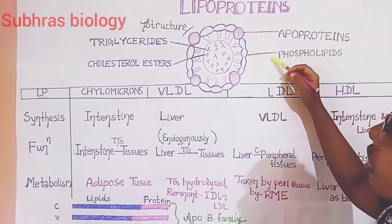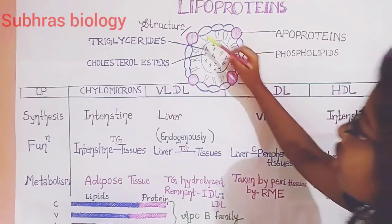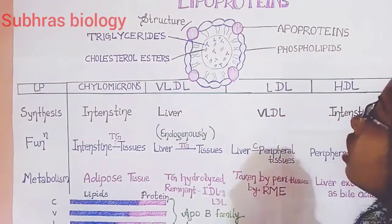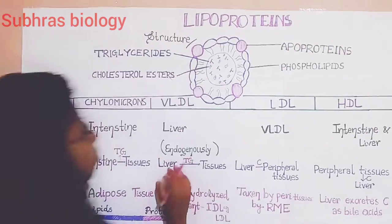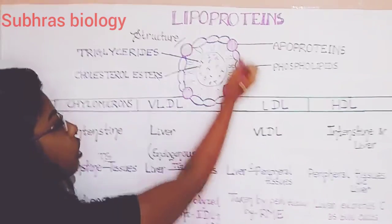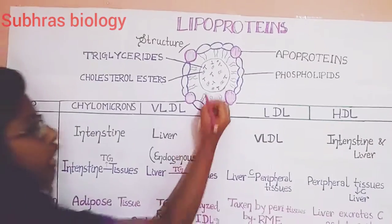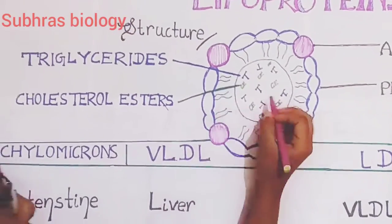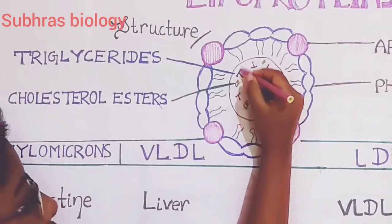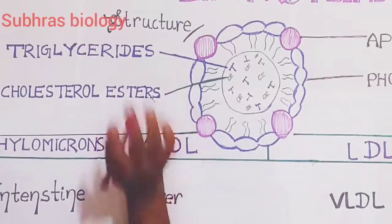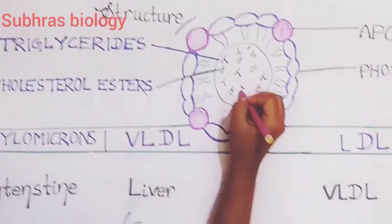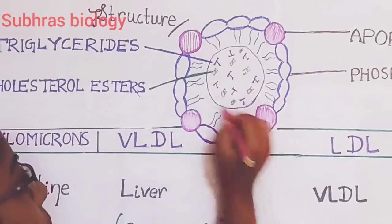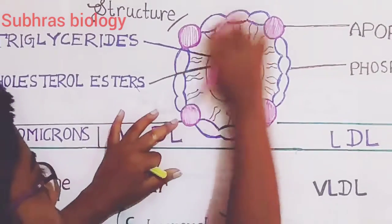I will cover the structure, synthesis, function and the metabolism of the lipoproteins. So here we will go for the structure. As you can see, this is the whole structure of the lipoproteins. In the inside part, it contains triacylglycerols and the cholesterol esters. This T stands for triacylglycerols or triglycerides, and CE stands for cholesterol esters. In the inside, this is the lipid content part.